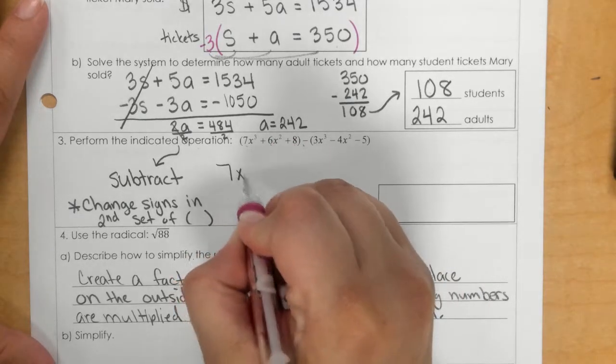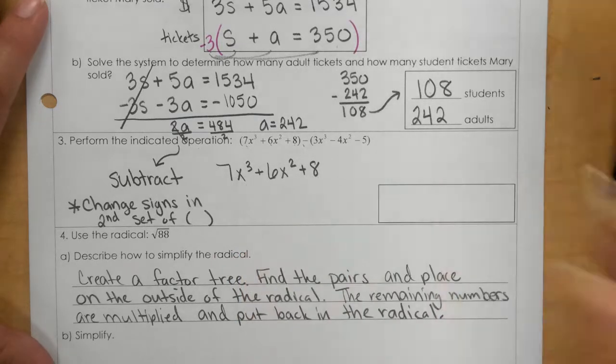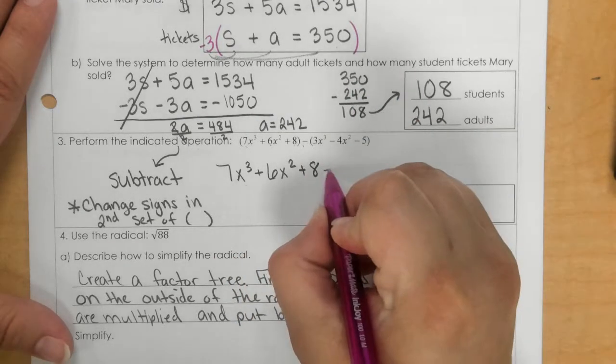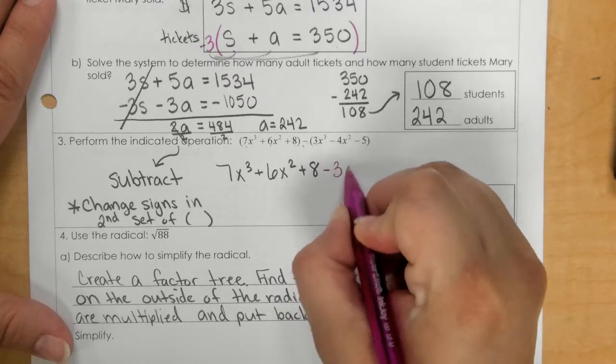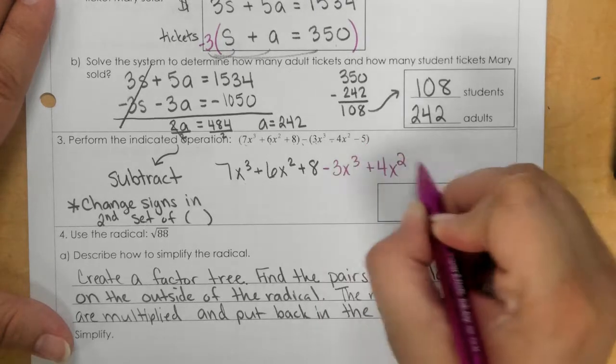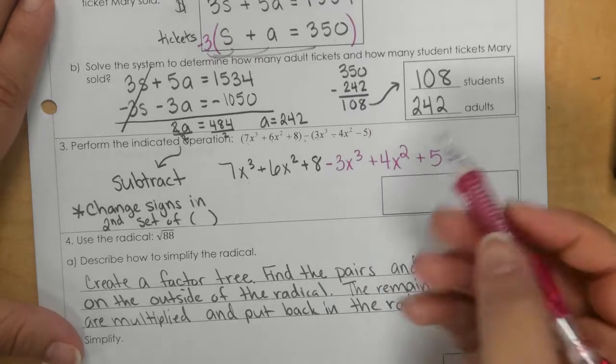Just drop the parentheses. This second part here, I'm going to change the signs. This becomes a negative 3x to the third, a positive 4x squared, and then a positive 5. So now I can go through and find my like terms.